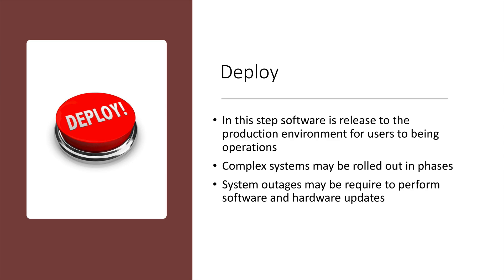The next step is to deploy the software into production. In this step, software is released to the production environment for users to begin operations. Complex systems may be rolled out in phases — pieces of the system are rolled out one at a time to limit risk. System outages may be required to perform software and hardware updates. These deployments are often done off hours, such as on a holiday weekend or late at night, when there is very limited usage on the system.